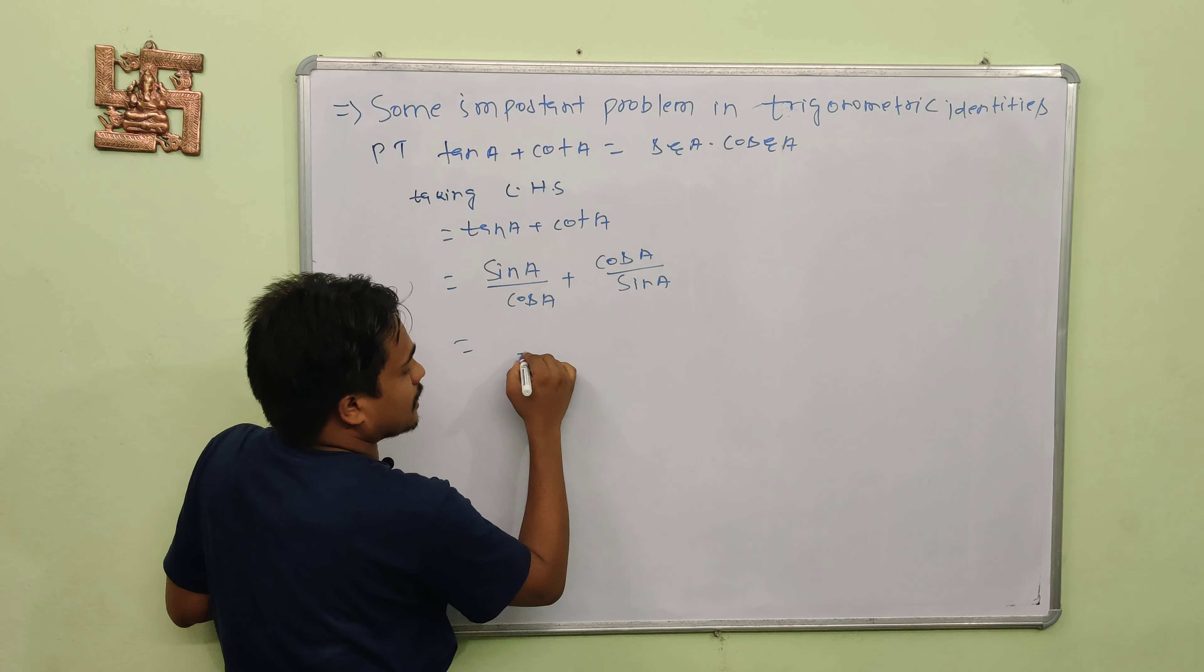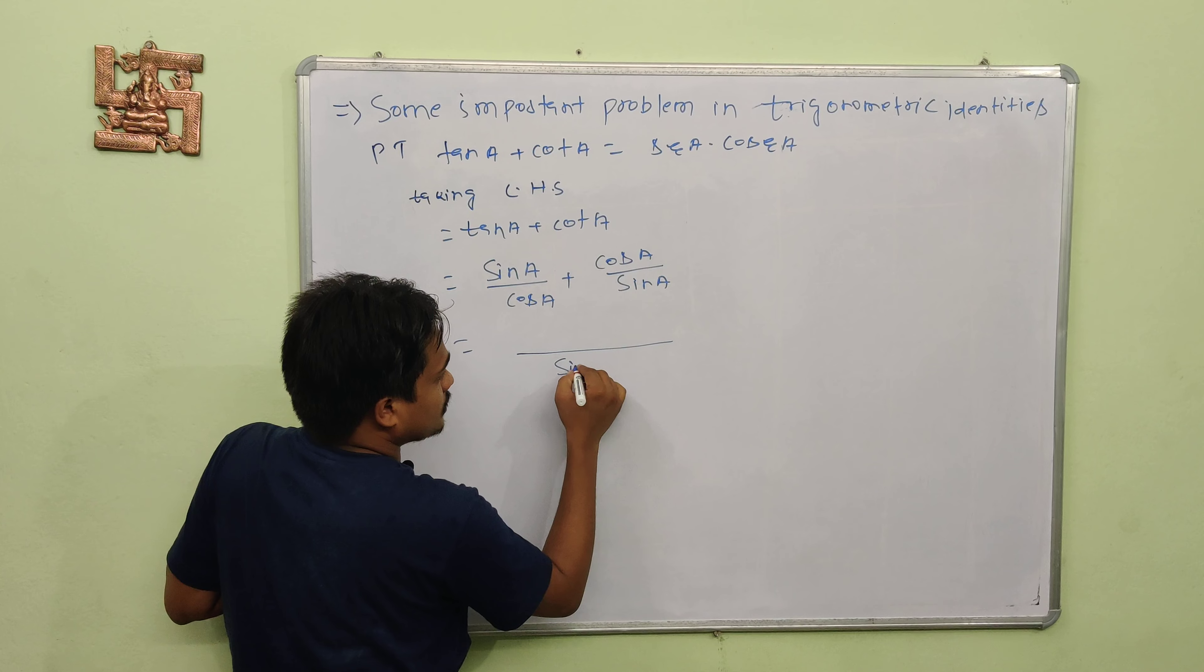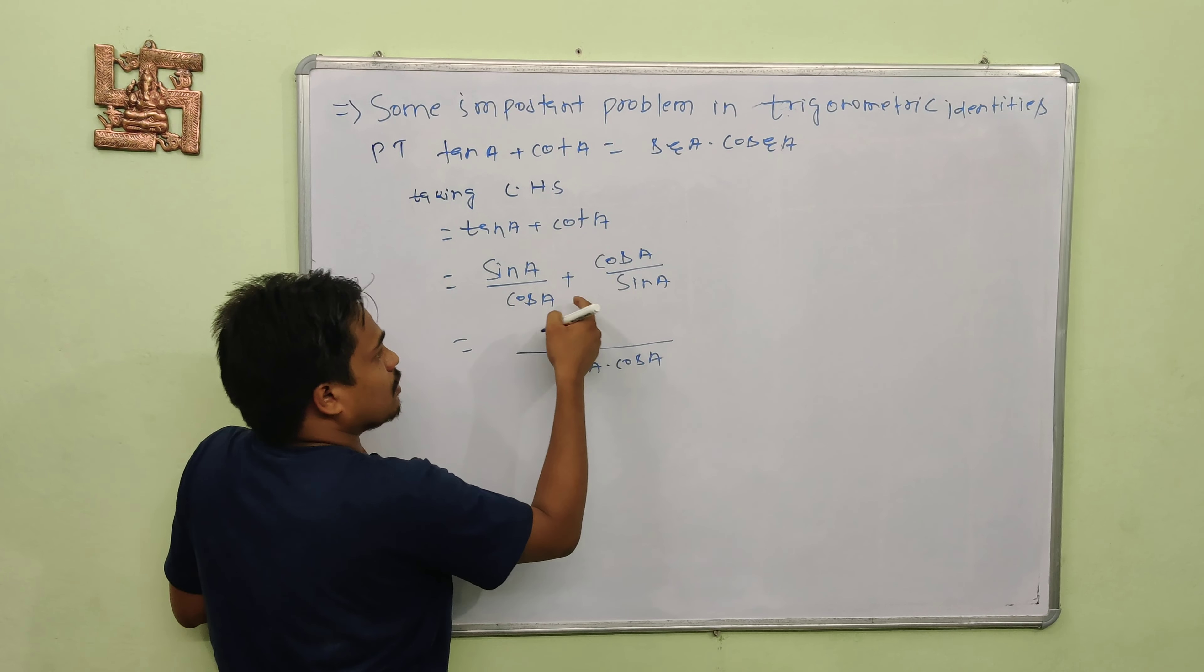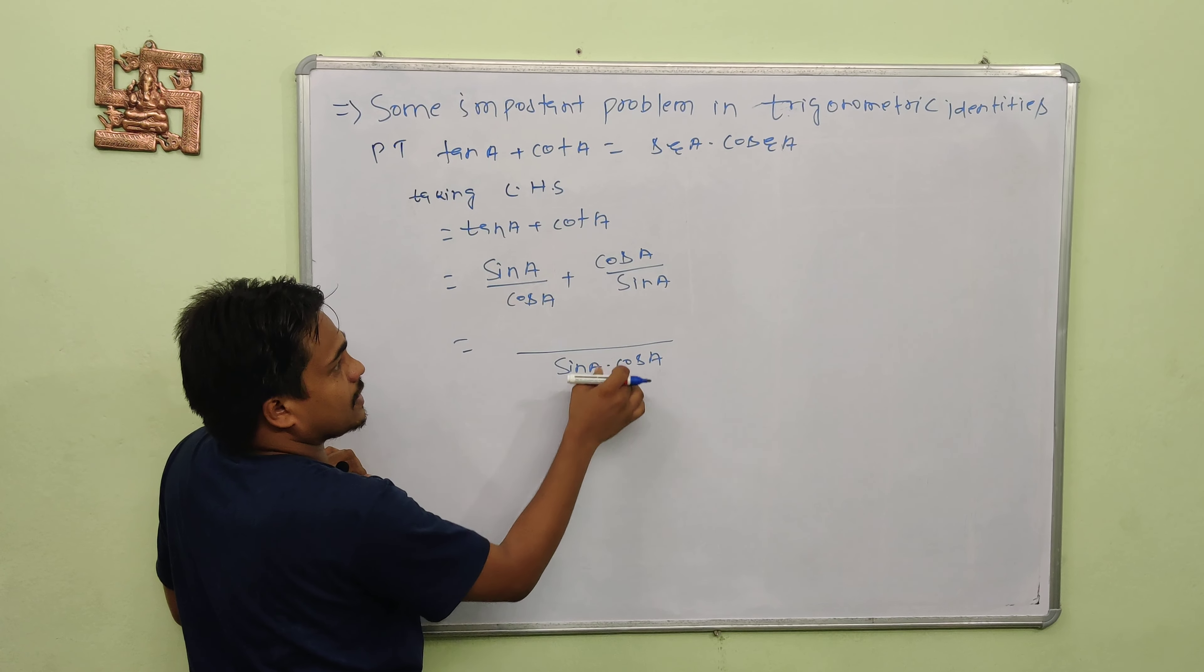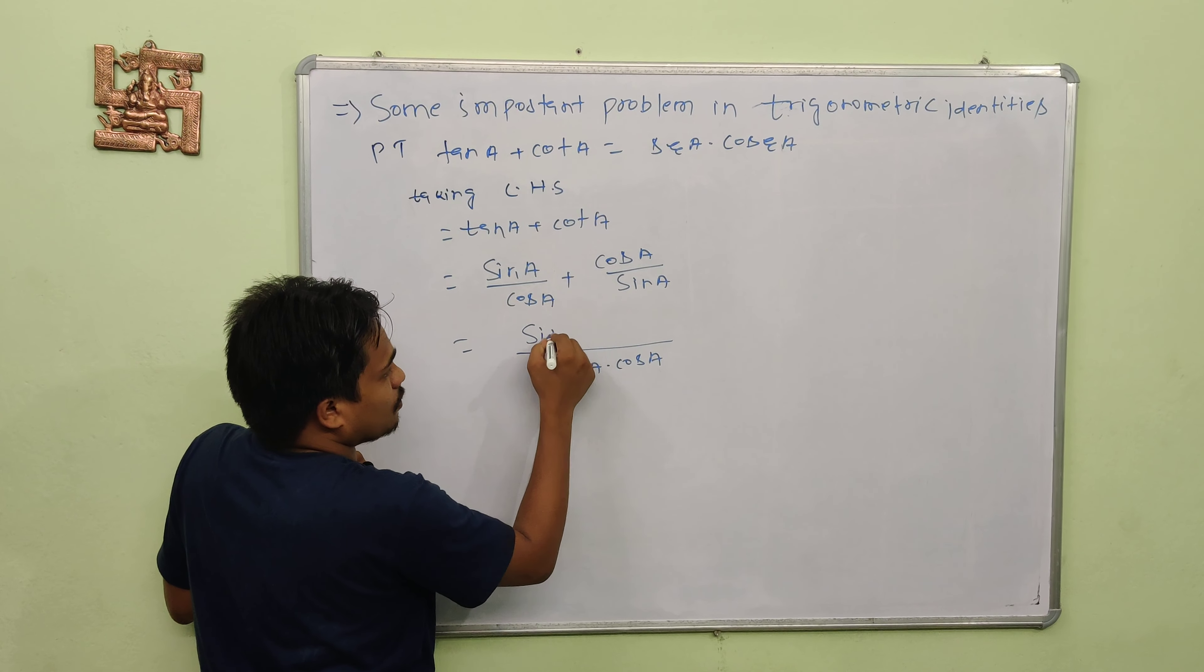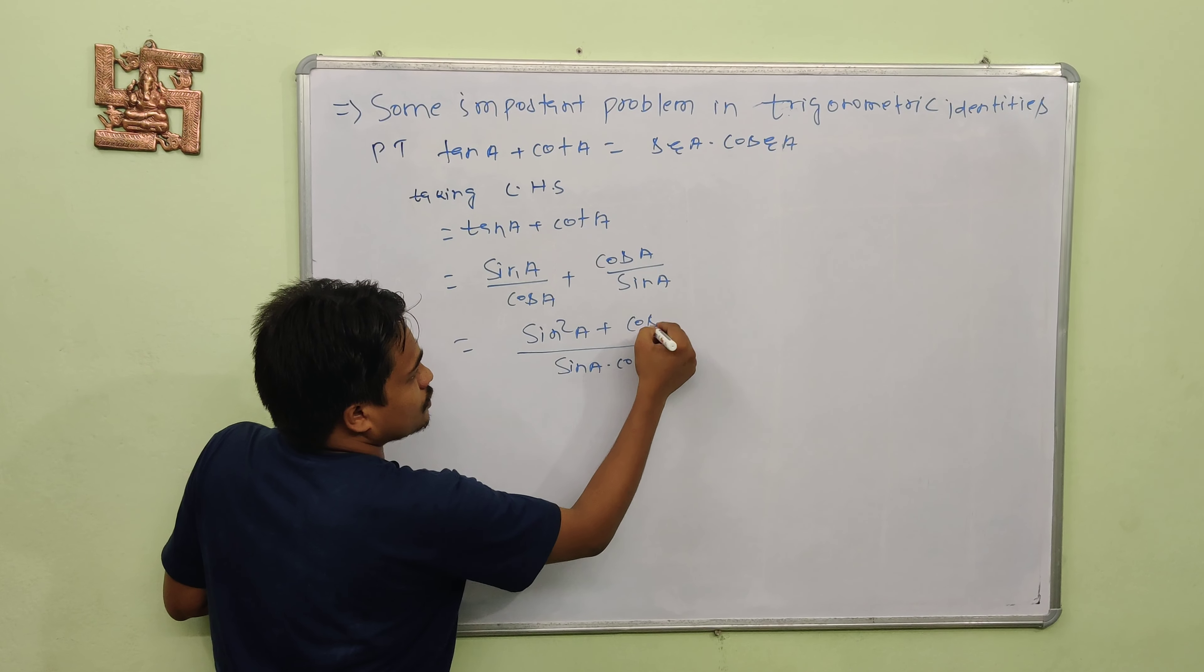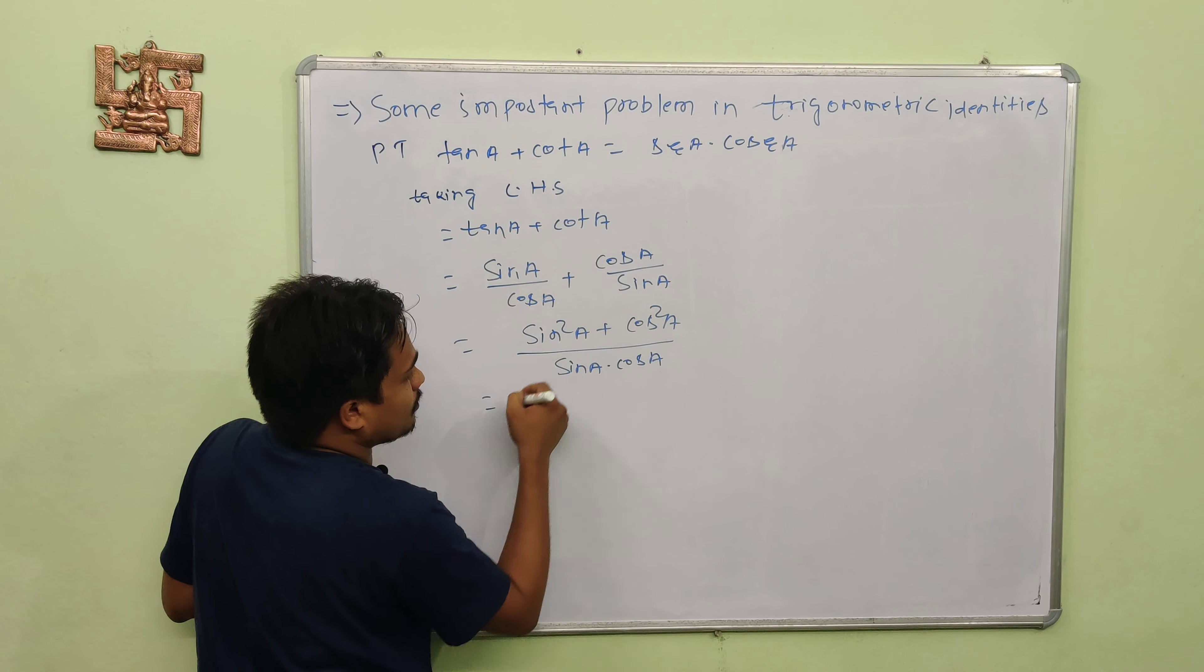Now for sin A and cos A, if we take LCM, we get sin A into cos A in the denominator. So this becomes sin squared A plus cos squared A over sin A cos A.